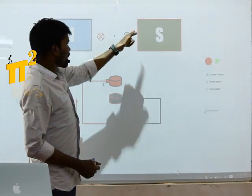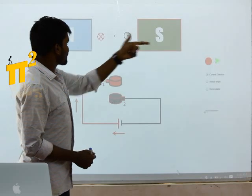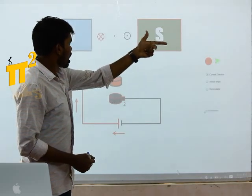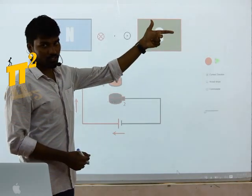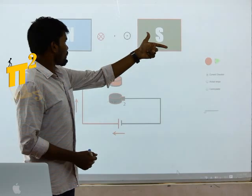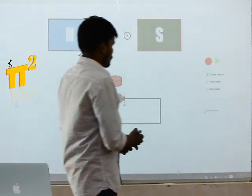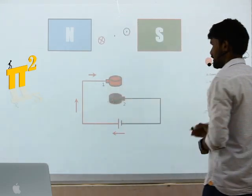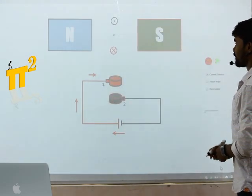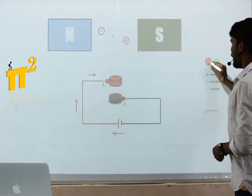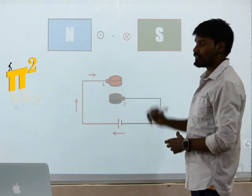Let's come to the black conductor. Flux is this way, current is coming out, so force is upwards. Force acting on black conductor is upwards and force acting on red conductor is downwards, so it will start rotating in this direction.